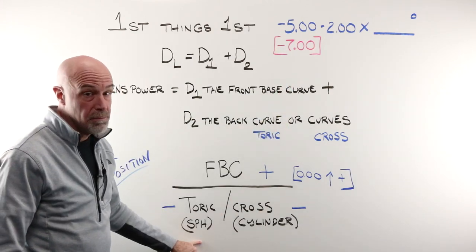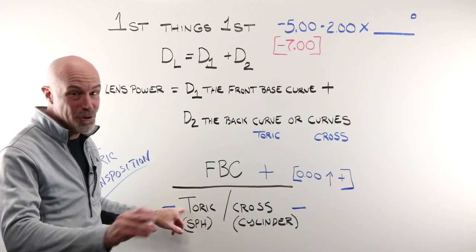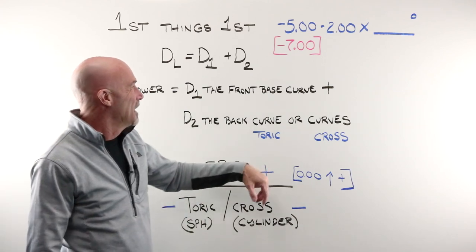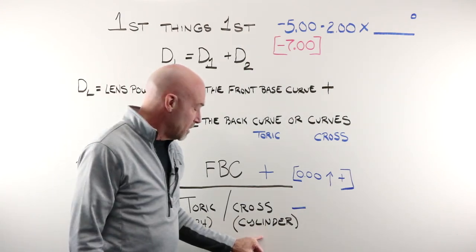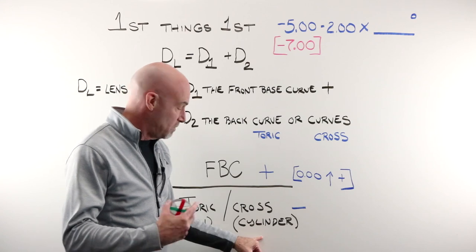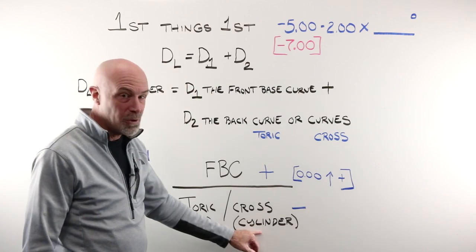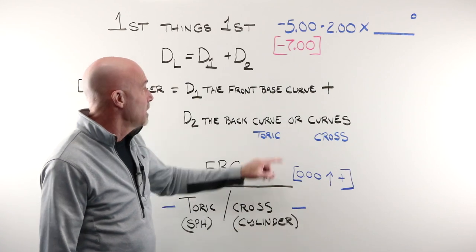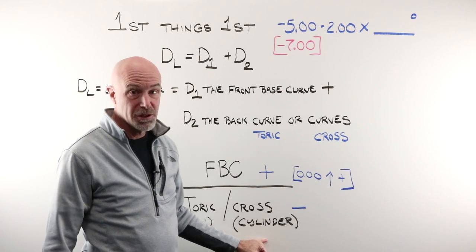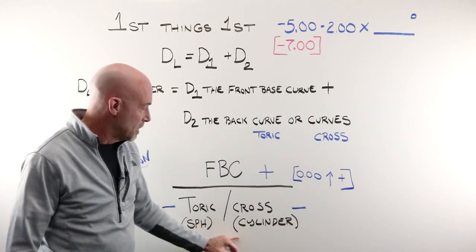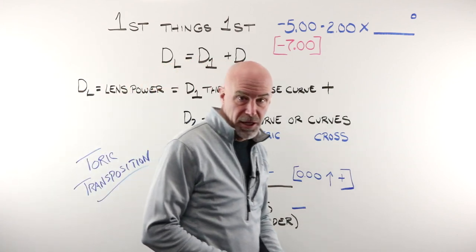The more shallow curve on the backside of a lens is called the toric curve, and that creates the spherical portion of the lens design. The steeper, stronger, more powerful curve is called the cross curve, and that creates the portion that creates the cylinder and the astigmatism correction. Those will always be minus in relationship to the plus front base curve.